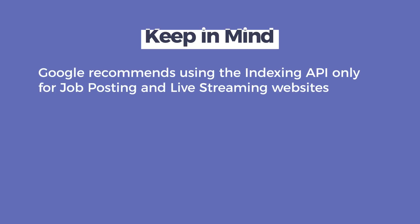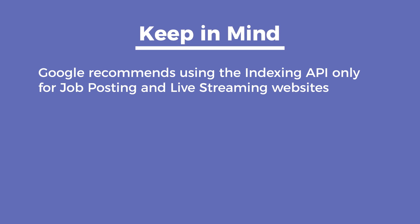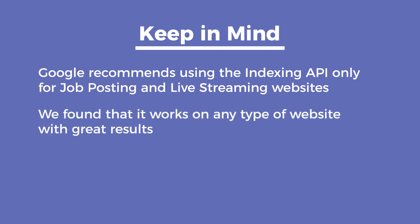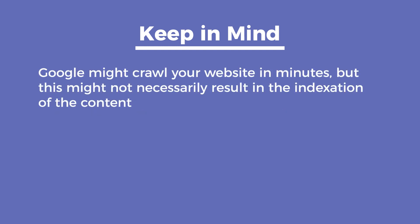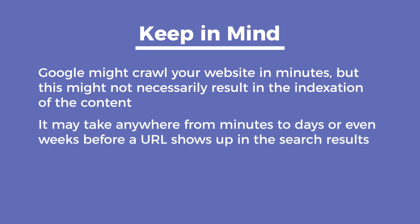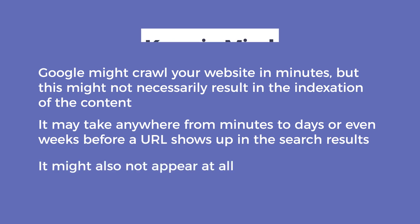Before we begin, we want to warn you that Google recommends using the Indexing API only for job posting and live streaming websites. However, during our tests, we found that it works on any type of website with great results. As Google recommends, you should not use the Indexing API on many websites — please proceed at your own risk. We also want to emphasize that Google might crawl your website in minutes, but this might not necessarily result in the indexation of the content. It may take anywhere from minutes to days or even weeks before a URL shows up in the search results, and it might also not appear at all.